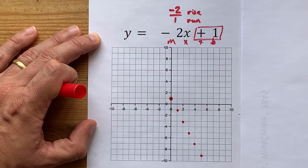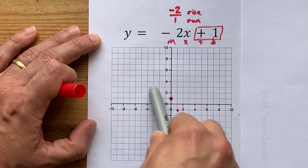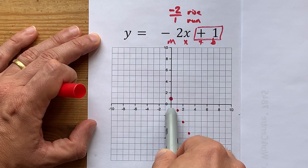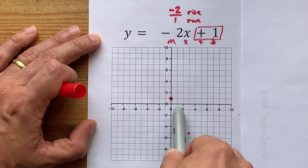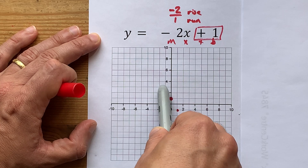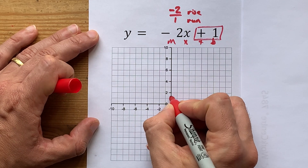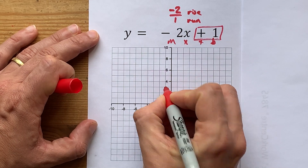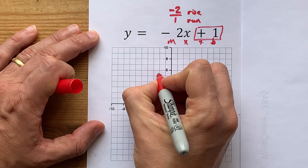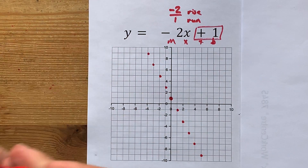You can probably see that if you wanted to put some dots on the other side, instead of going down and right, you'd be going up and left. So let's do that as well: up 2, left 1 — repeating that pattern in the opposite direction.